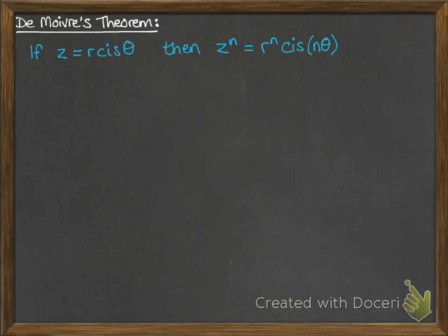just timesing it by itself however many times you need, then it quite logically leads to the fact that if you're doing z to the power of n, you'll do the modulus to the power of n and theta times n.